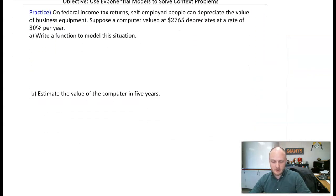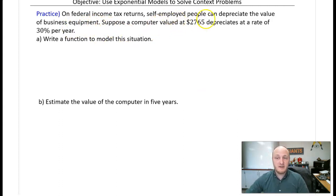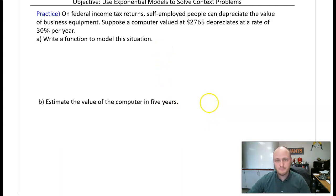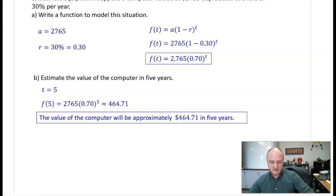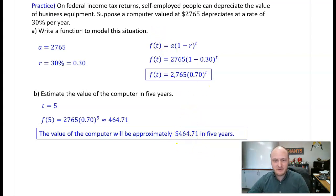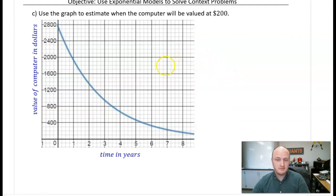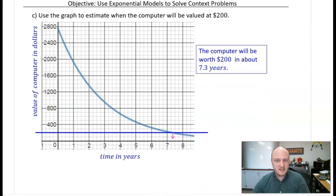Here is another example — just in time for tax season. On federal income tax returns, self-employed people can depreciate the value of business equipment. Suppose a computer valued at $2,765 depreciates at a rate of 30% per year. Since it depreciates 30%, the base is 0.7 — it retains only 70% of its value each year. In five years, that computer will be worth $464.71. From the graph, it will be worth $200 in about 7.3 years.